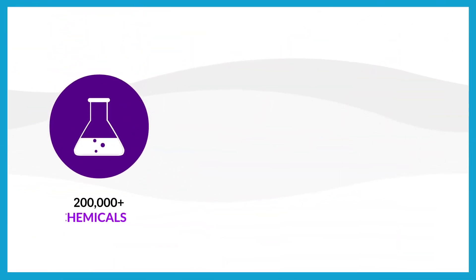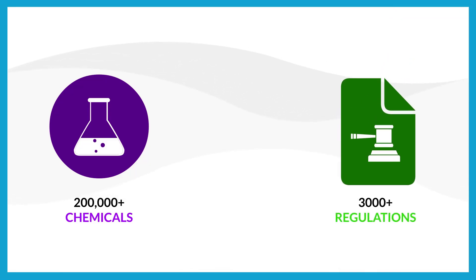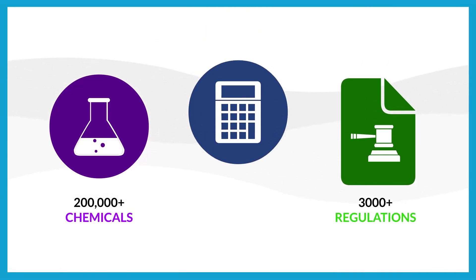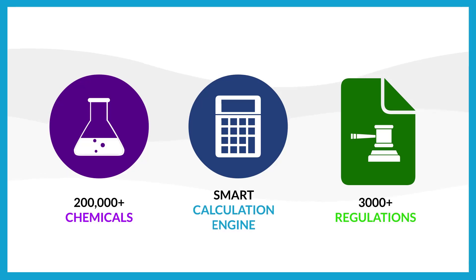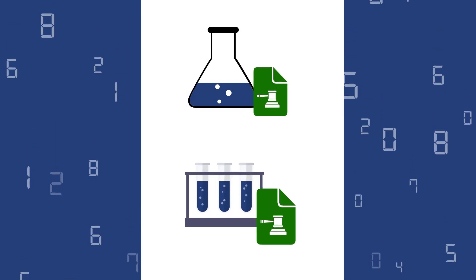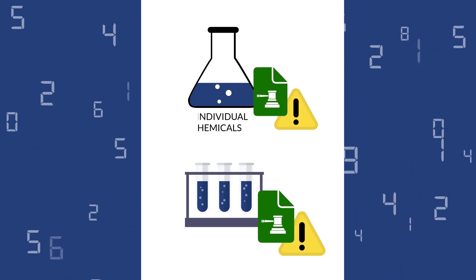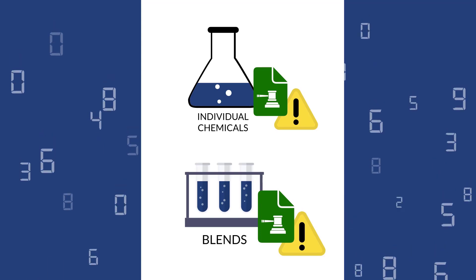ERA's MCL contains over 200,000 chemicals and over 3,000 regulations for you to choose from. It has a smart calculation engine that tallies and automatically applies regulatory exemptions and correctly identifies hazards for individual chemicals and blends.